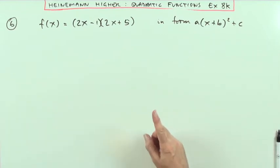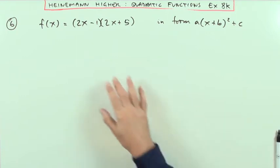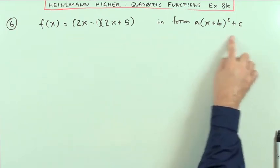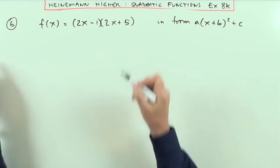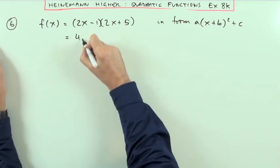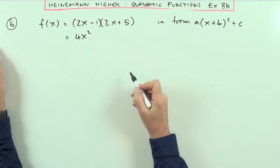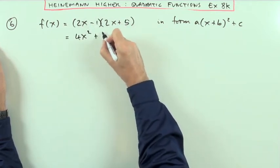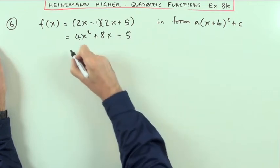Now it doesn't say stating the values of a, b, and c, so it'll be sufficient to leave it in this form once you've arrived at it. Well, the first thing is this is no use, I'll need to multiply that out. So I've got 4x² plus 10 minus 2 is plus 8x minus 5.